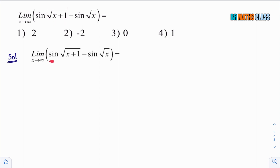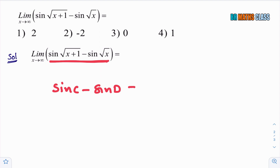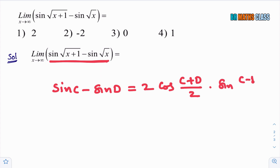You can observe here this is of the form sin C minus sin D. What is the formula for sin C minus sin D? The formula is 2 cos of (C plus D) by 2, into sin of (C minus D) divided by 2. You apply this formula to this.